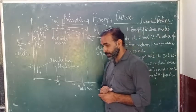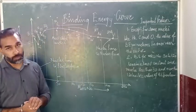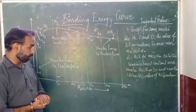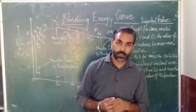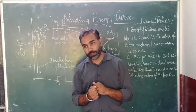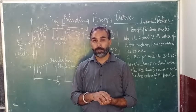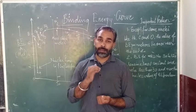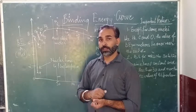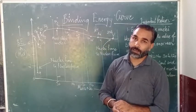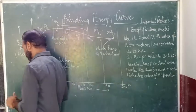The value of binding energy per nucleon basically gives a measure of the stability of the nucleus. Binding energy per nucleon for any particular nucleus gives the stability of the nucleus. Greater the value of binding energy per nucleon, more is the stability of the nucleus. It is directly proportional to the binding energy per nucleon.